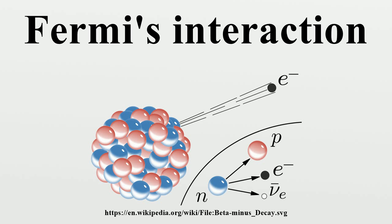The strength of Fermi's interaction is given by the Fermi coupling constant GF. The most precise experimental determination of the Fermi constant comes from measurements of the muon lifetime, which is inversely proportional to the square of GF. In modern terms, G is the coupling constant of the weak interaction, and MW is the mass of the W boson which mediates the decay in question.